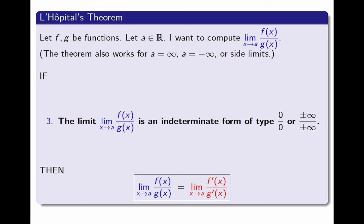What that means is that for this to work, either the limit of the numerator and the limit of the denominator are both 0, separately, or each one of them is separately either plus infinity or minus infinity. Notice that those are the only indeterminate forms of quotients.